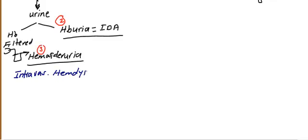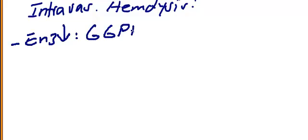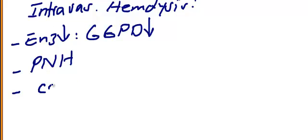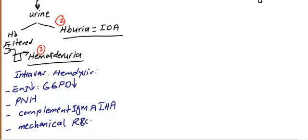For intravascular hemolysis, remember three to four examples. First, enzyme deficiency such as G6PD (glucose-6-phosphate dehydrogenase) deficiency. Second, PNH (paroxysmal nocturnal hemoglobinuria). Third, complement-mediated hemolysis like IgM autoimmune hemolytic anemia. Fourth, mechanical destruction of red blood cells, such as in aortic stenosis.